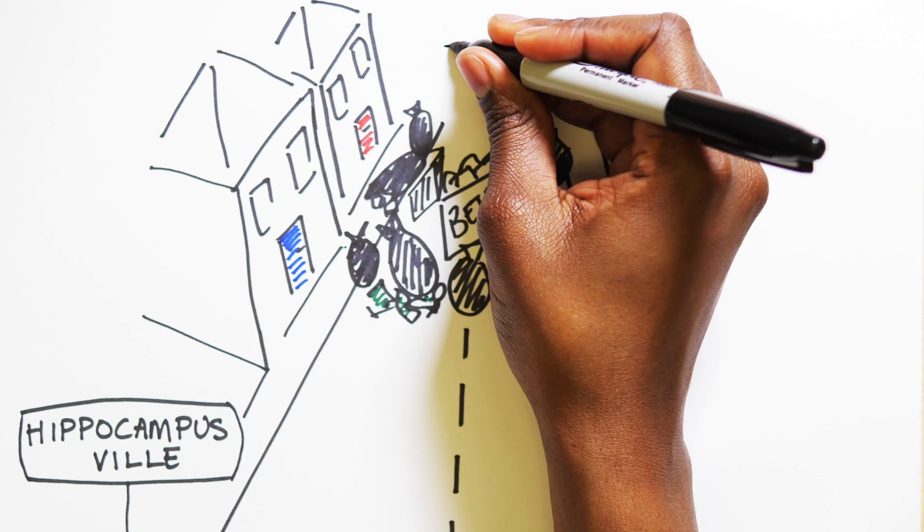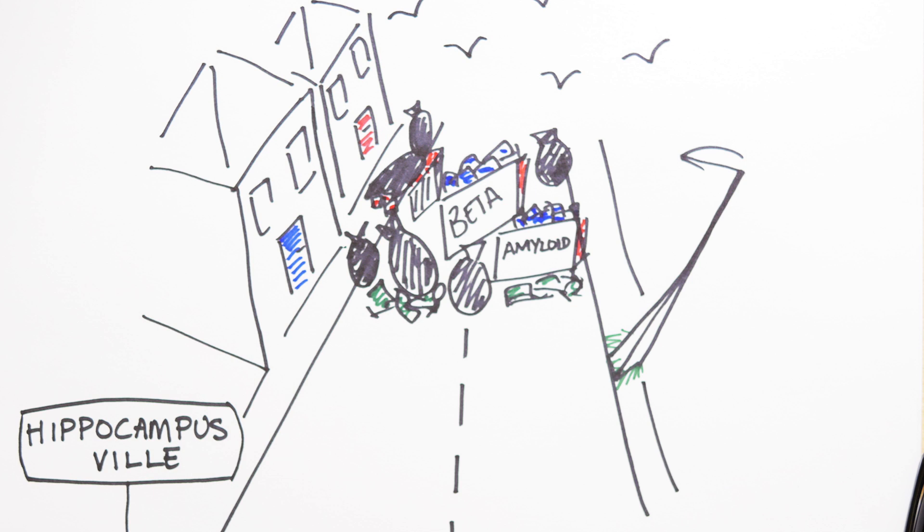This initially affects a suburb involved in memory called the hippocampus, but can go on to affect outer neighborhoods involved in cognition and emotion. So your body responds to all this rubbish by declaring martial law, sending the immune system into the suburbs to clear it up.